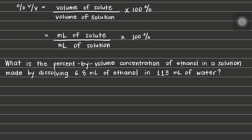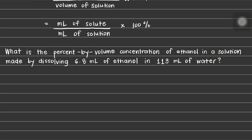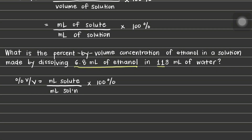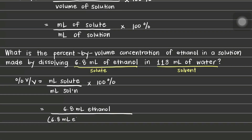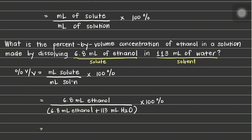Let us try to solve the following problem using percent by volume. What is the percent by volume concentration of ethanol in a solution made by dissolving 6.8 mL of ethanol in 113 mL of water? Let us start by writing our formula for percent volume, then identify the given: 6.8 mL of ethanol and 113 mL of water. After substituting our given into the equation, our final answer is 5.7% ethanol.